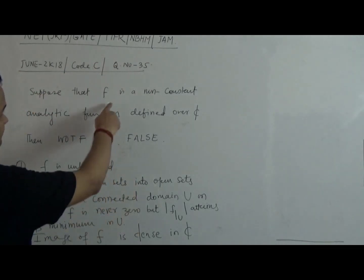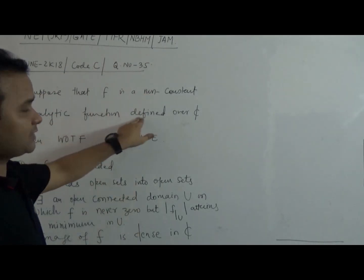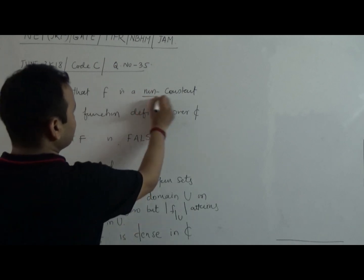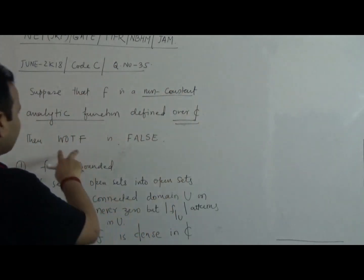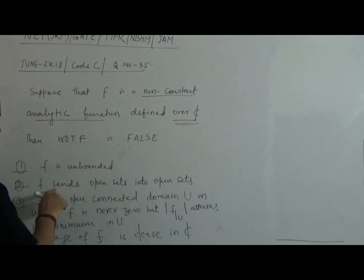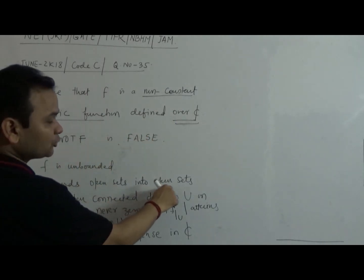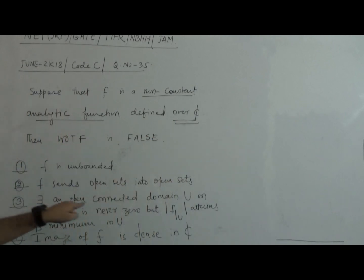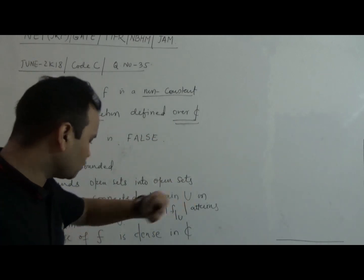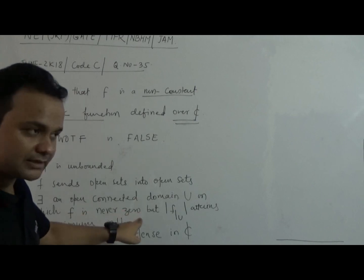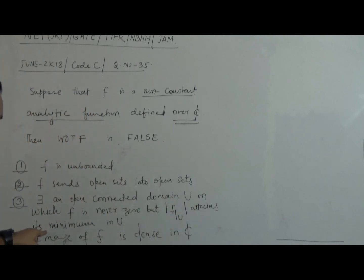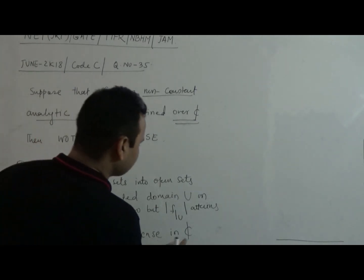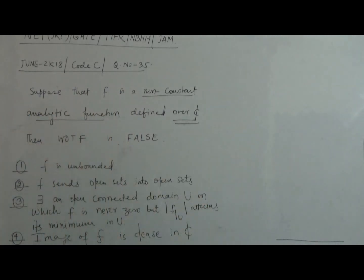The question is: suppose f is a non-constant analytic function defined over all of ℂ. Then which of the following is false? Options are: (A) f sends open sets to open sets; (B) there exists an open connected domain U on which f is never zero but f restricted to U attains its minimum on U; (C) f is unbounded; (D) the image of f is dense in ℂ.